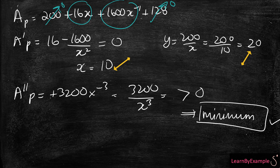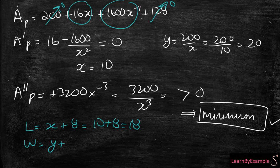So we know that our dimensions, our X and Y, are right. Let's find L is equal to X plus 8, equal to 18. And W is equal to Y plus 16, which is 36. So that's it, hope that helps.